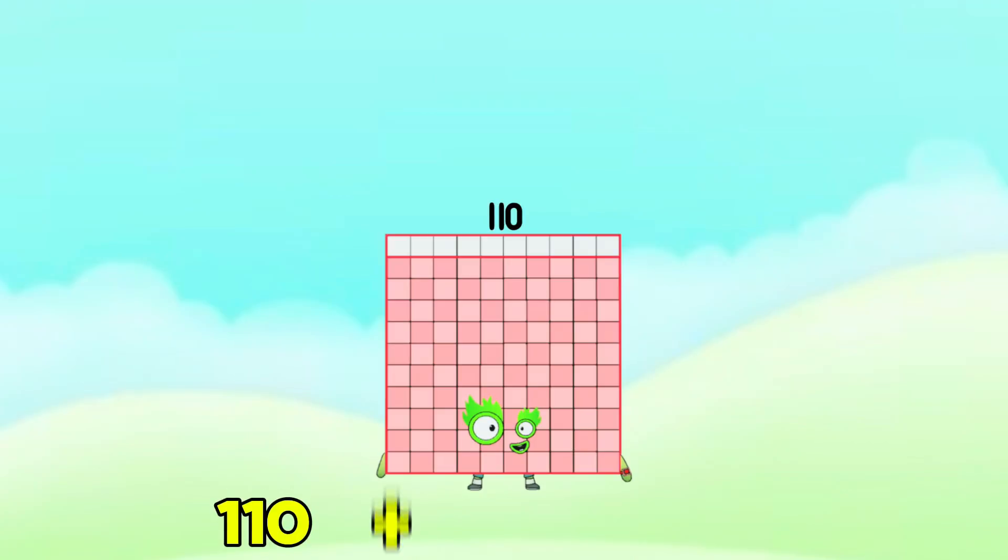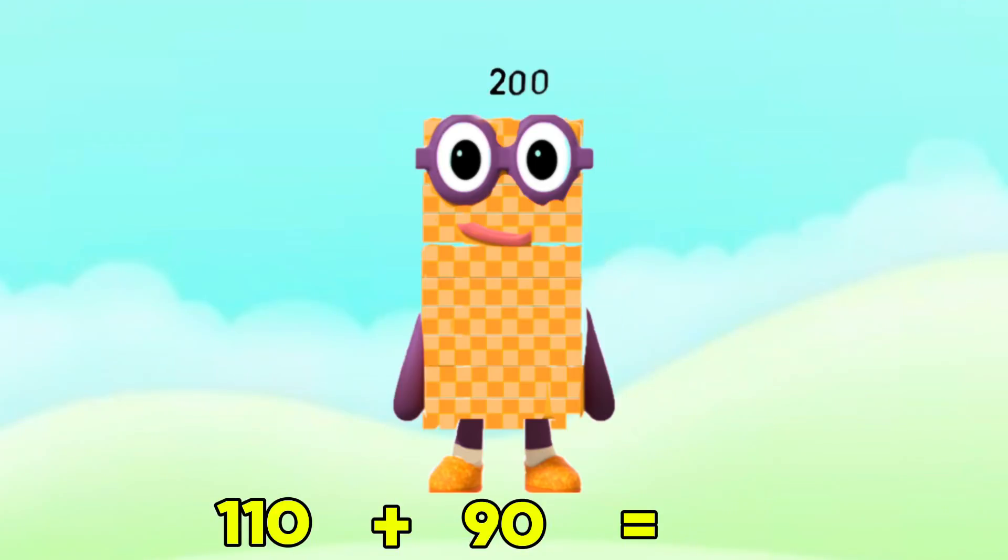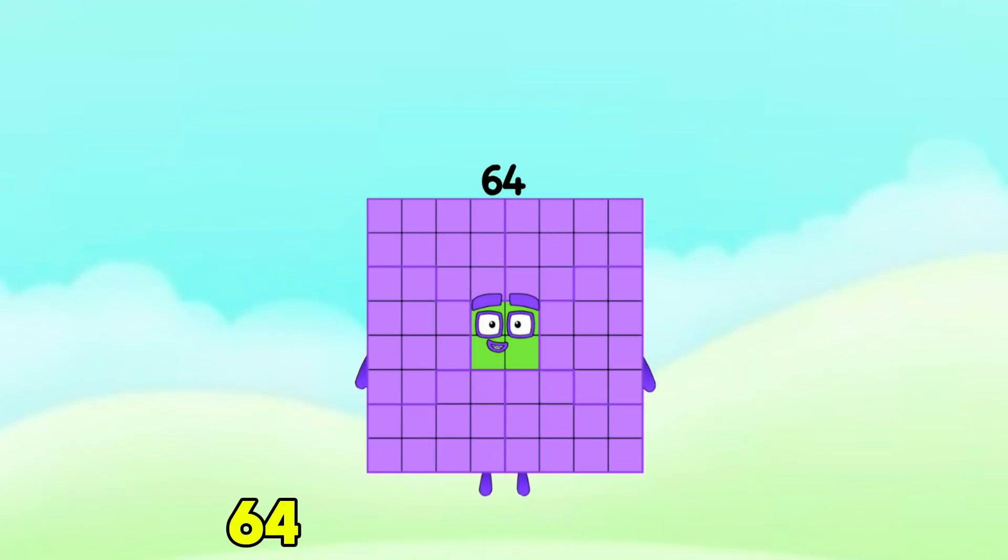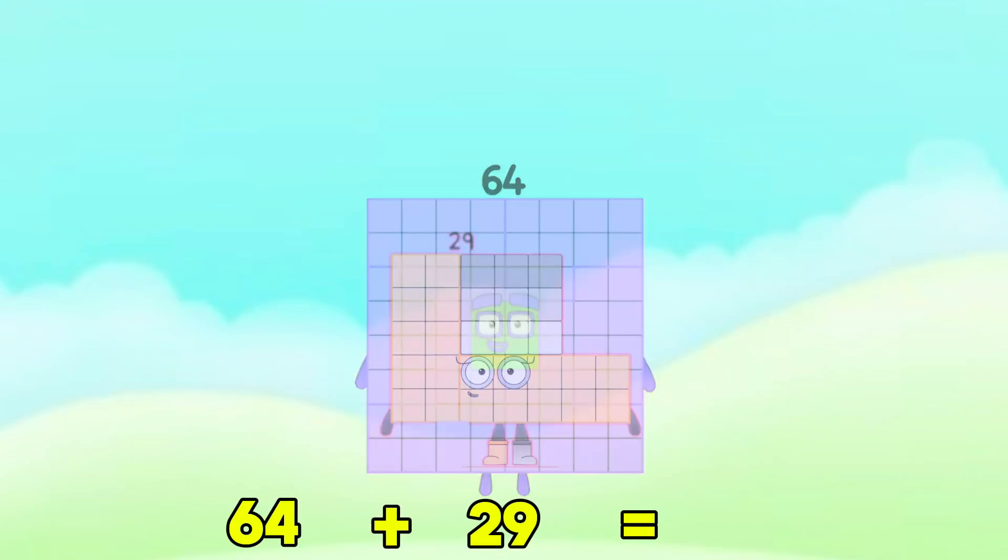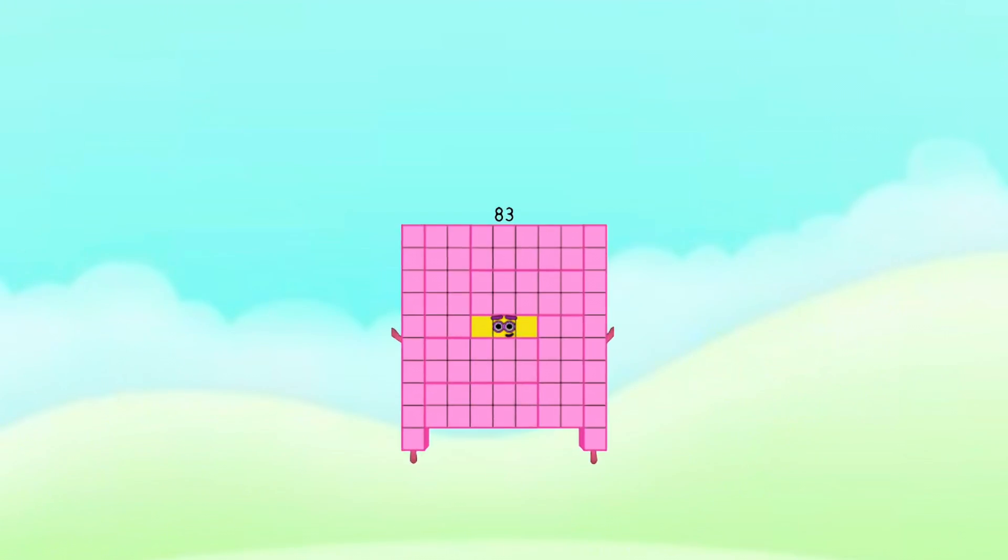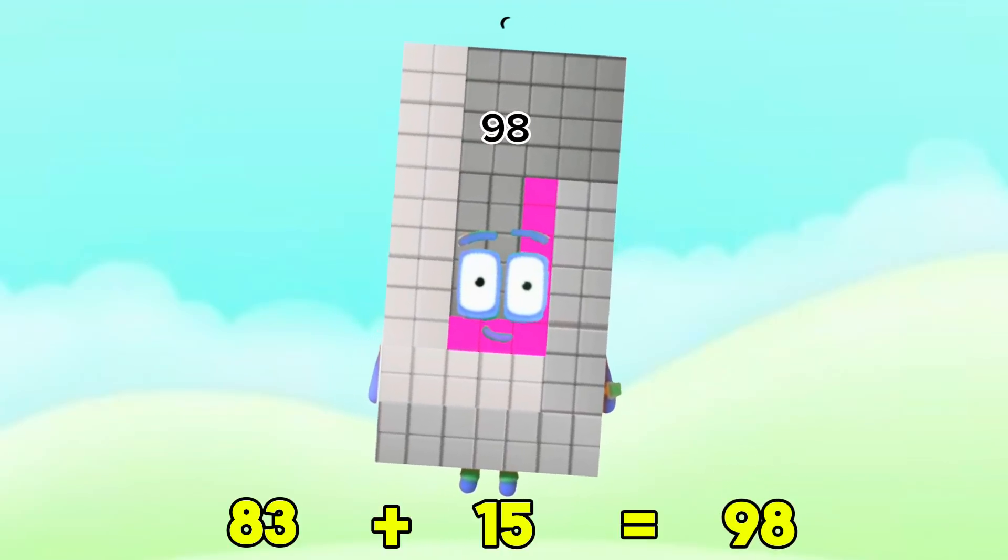110 plus 90 equals 200. 64 plus 29 equals 93. 83 plus 15 equals 98.